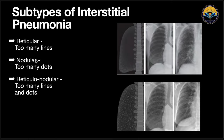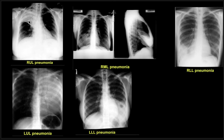Interstitial pneumonia can be a reticular type, nodular type, or reticulonodular type. Reticular type shows many lines throughout the lung fields. Nodular type shows very minute nodules scattered throughout. If we see both, it is the reticulonodular type of interstitial pneumonia. For example, right upper lobe pneumonia is straightforward to identify; right middle lobe pneumonia may be less certain on frontal view but confirmed on lateral X-ray as right middle lobe pneumonia.